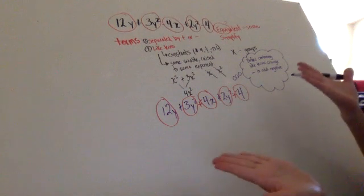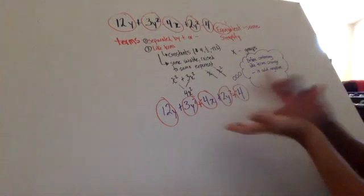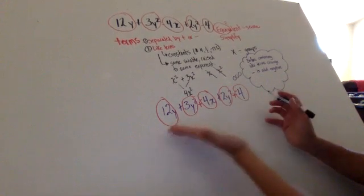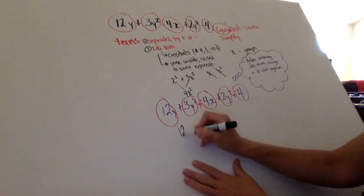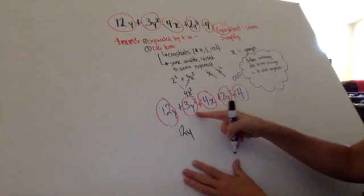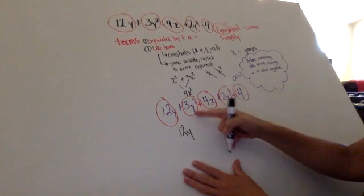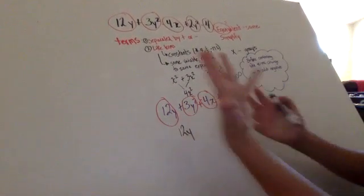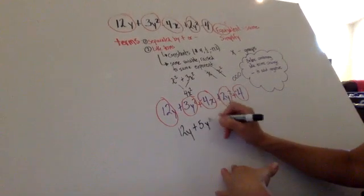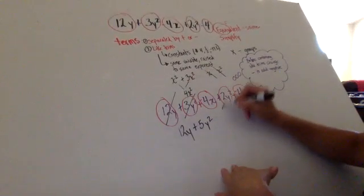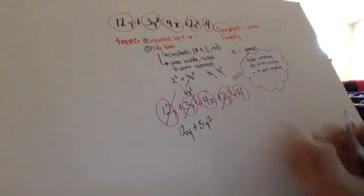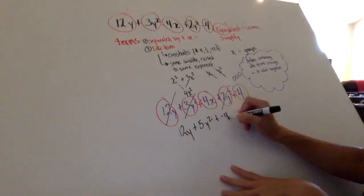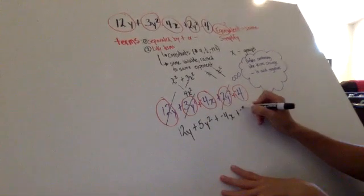Okay. So now we're just looking, we just want to put things together that are similar so we can simplify this expression, make it a little bit smaller. So I have a 12y and I don't see anything else that has y there. So that 12y is going to have to just stay 12y. But now I have a 3y squared and I have a 2y squared. So 3y squared, and I'm always going to, it's positive, 3y squared and 2y squared. So I have three of them and two of them. So together I have five of them. So 5y squared. And I like, once I write it down underneath, I like crossing it off. Sometimes these things get really long and you might miss one.